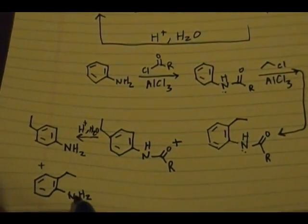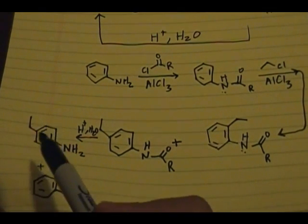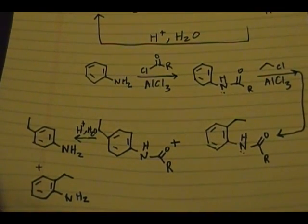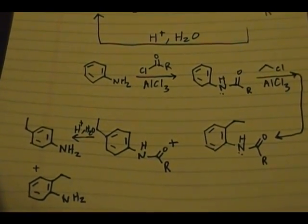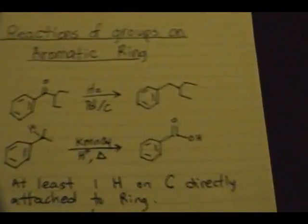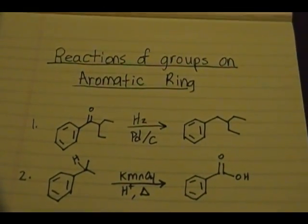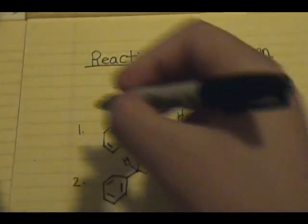So you have one of your products in the ortho position, the other one in the para position. So there you have it, those are the five reactions of substituents present on the aromatic ring. Now let's do a quick recap of what we have covered.